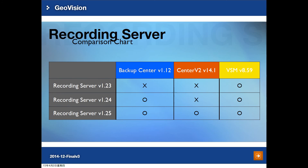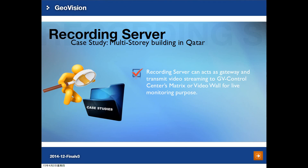This chart compares different versions of Recording Server. Recording Server V1.23 supports VSM V8.59. Recording Server V1.24 adds support for Backup Center V1.12 and VSM. Recording Server V1.25 supports all three: Backup Center, Center V2, and VSM.